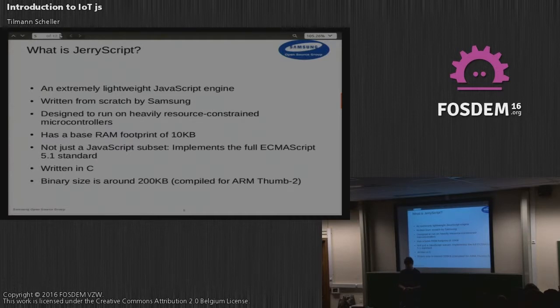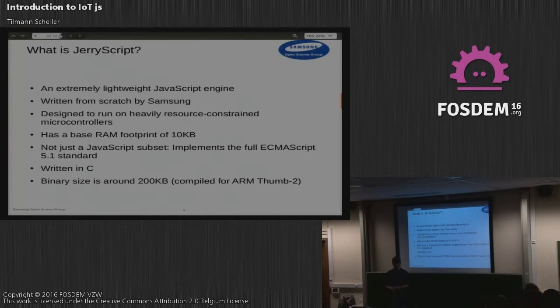It's important to note that JerryScript doesn't just implement some JavaScript subset — it really implements the full ECMAScript 5.1 standard. It is written in C and currently the binary size is around 200 kilobytes if you compile it for Thumb 2.